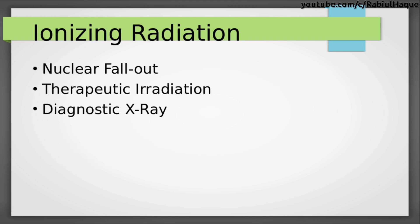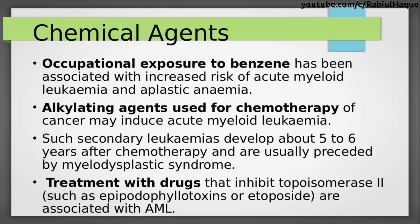Regarding acquired factors, individuals can be exposed to ionizing radiation following nuclear fallout, therapeutic irradiation, and diagnostic X-ray, and ionizing radiation is a very important acquired factor that can lead to leukemia. Regarding chemical agents, occupational exposure to benzene has been associated with increased risk of acute myeloid leukemia as well as aplastic anemia.